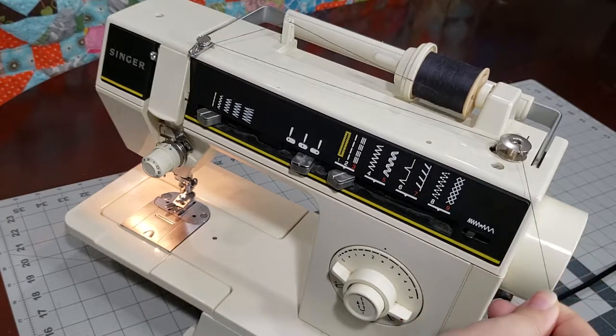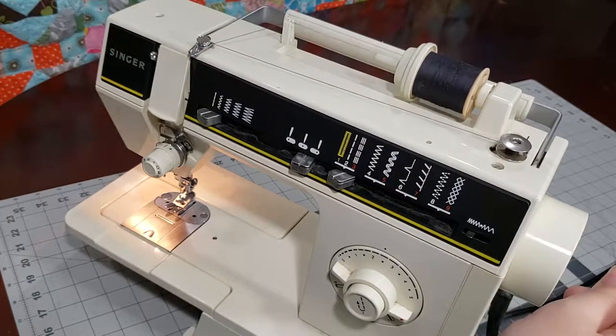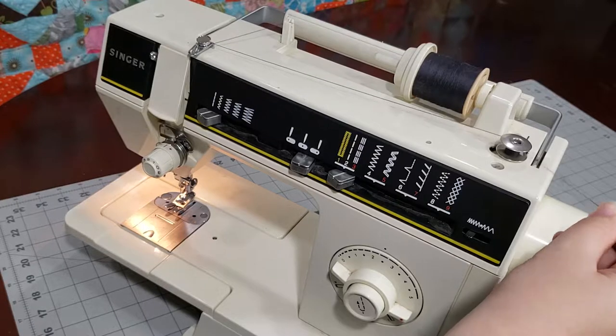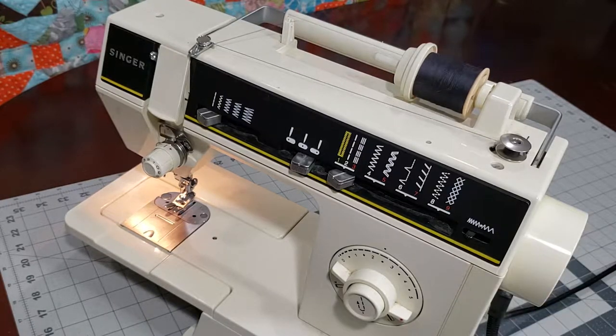Hold the end of the thread and press the foot pedal to run the machine until the bobbin is wound to your liking. This machine will automatically stop when your bobbin is full.